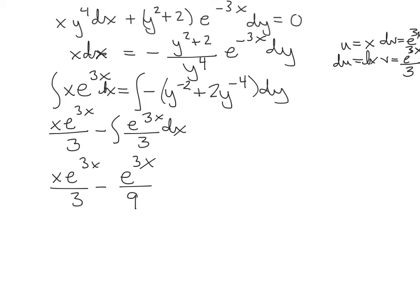This first term stays, minus the integral of e to the 3x is e to the 3x divided by another 3, so that's 9. Right now I have a constant on this side, but I'm going to wait and put it on the other side. The integral of the y side, everything's negative. The integral of y to the negative 2 is y to the negative 1 divided by negative 1. The integral of y to the negative 4 is y to the negative 3 divided by negative 3. Then I'm going to add my constant.